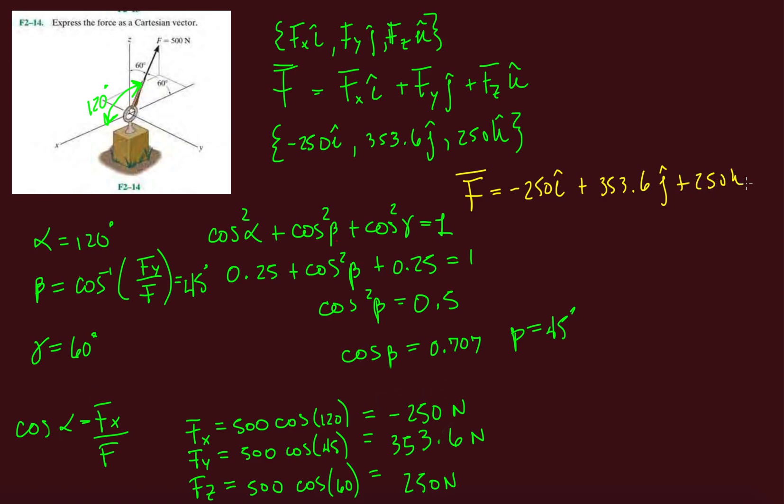And that's it. I guess the crux of this problem was determining - using what we've already done with coordinate direction angles - using some of that knowledge to find beta, the coordinate direction angle in the y-direction. We found all the other components x, y, and z and then solved for that. All right guys, thanks for your time. I'll see you in the next video.